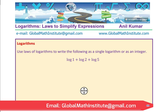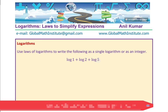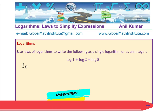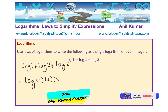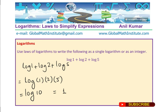Now let's look into the solution of the next question: log 1 plus log 2 plus log 5. Using the product rule, we write this as log of (1 × 2 × 5), which is log of 10. The base is 10, and therefore this is just 1. These questions use very good numbers — simple, but they help you understand the laws of logarithms.